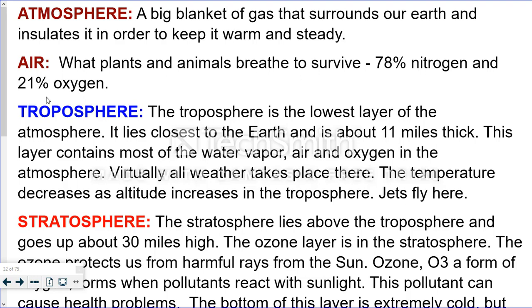Now the first layer of the atmosphere is the troposphere. It's the layer that's closest to the Earth, and it's about 11 miles thick. This layer contains most of the water vapor and air and oxygen in our atmosphere. And almost all of the weather that occurs on Earth takes place here.